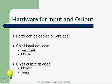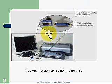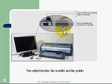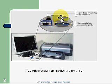Hardware for input and output: ports can be either cabled or wireless, and ports are usually on the back of the computer. We can identify a port by the type of plug that plugs into it. A typical monitor port might be a VGA plug or jack with 15 pins. You might have a USB port, or a keyboard or mouse port. Chief input devices are the keyboard and mouse; chief output devices are the monitor and printer. Here's an example of two output devices: a 15-pin VGA on the left and a 25-pin printer port on the right. These plug into the back of the computer, and each port is unique to the type of plug that fits it.